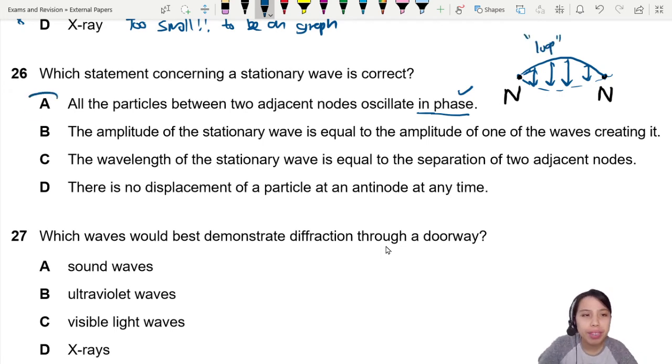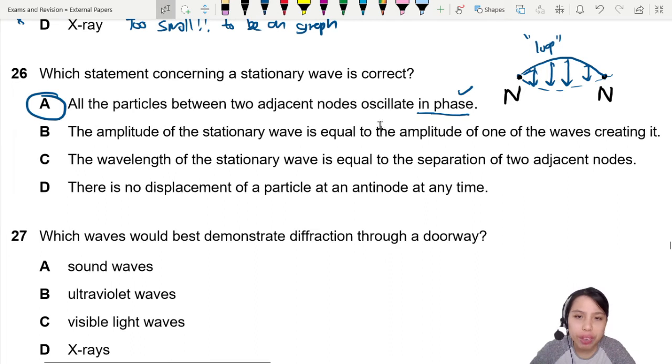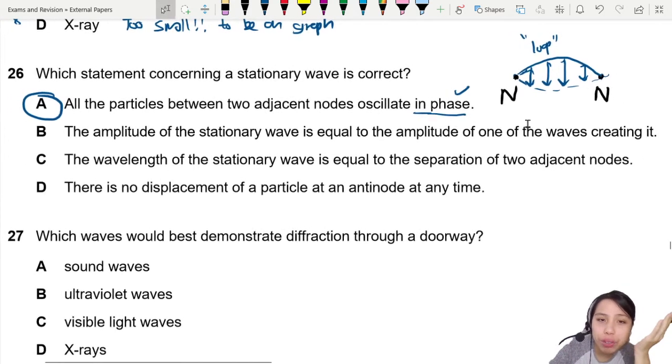So it looks correct to me. Maybe this is the answer. Let's check the rest to be sure. B says amplitude of a stationary wave is equal to amplitude of one of the waves creating it. You need to remember how stationary wave is formed.